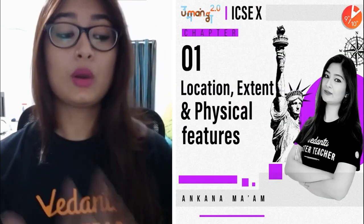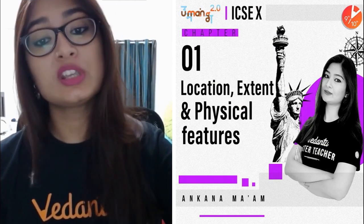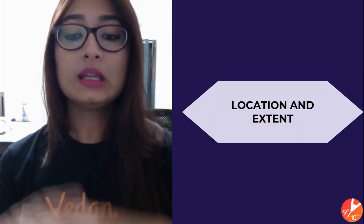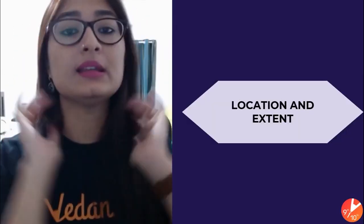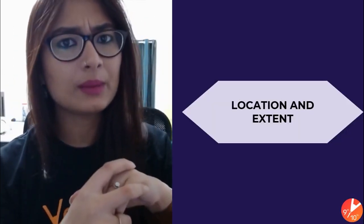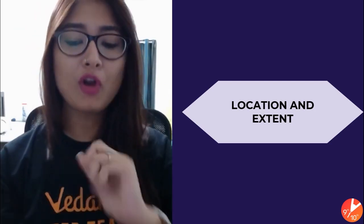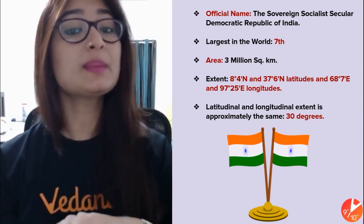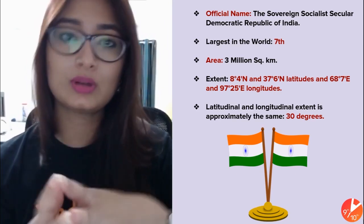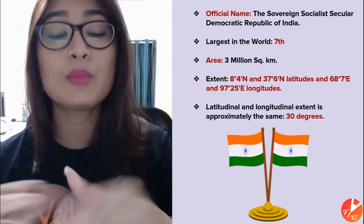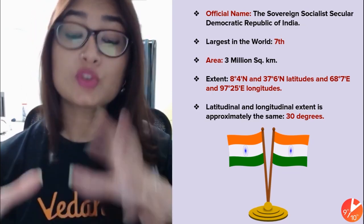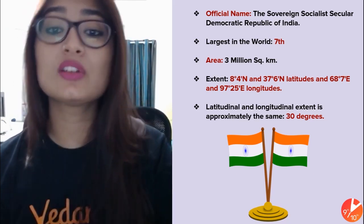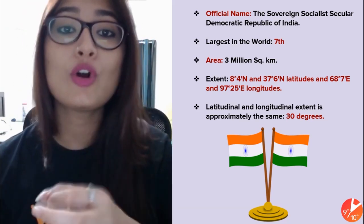We are going to begin with the chapter on Location, Extent, and Physical Features. First of all, let's talk about location and extent — of course, India is our nation. The very first and important thing is the official name of our country. The official name of India is actually the Sovereign Socialist Secular Democratic Republic of India.